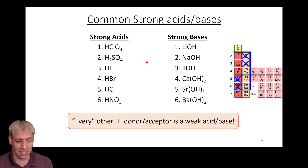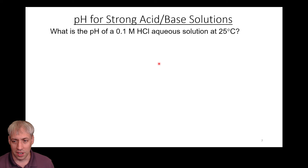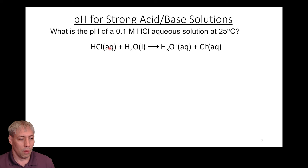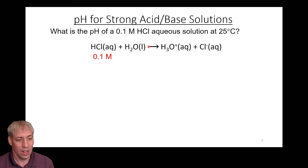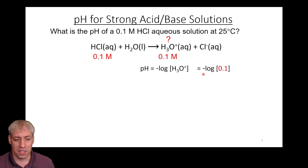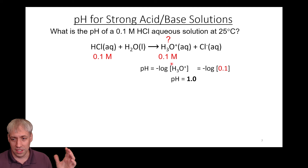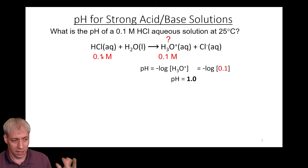If you know the concentration of a strong acid, it's really easy to figure out the pH. For example: what is the pH of a 0.1 M HCl solution at 25°C? HCl + H2O gives H3O+ and Cl-. Since it's a strong acid with a unidirectional arrow, our concentration of H3O+ is 0.1 M. We take the negative log, and the pH is effectively 1. Strong acid concentration directly gives you H+ concentration — the pH is just the negative log of that concentration.